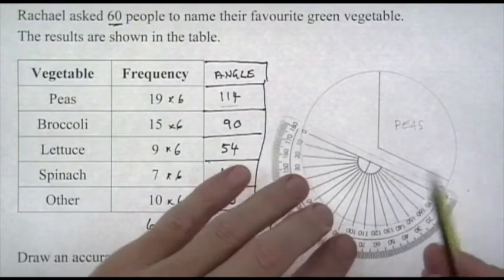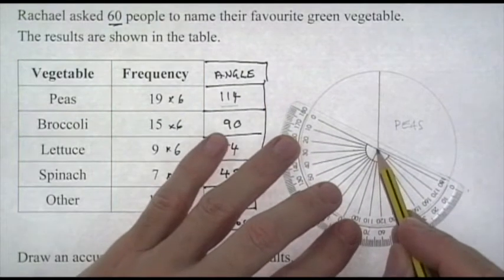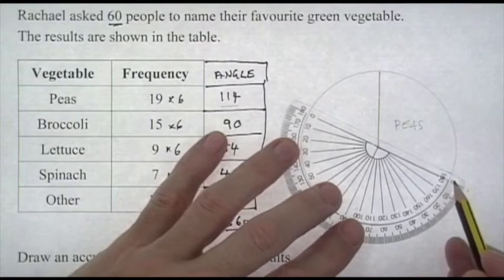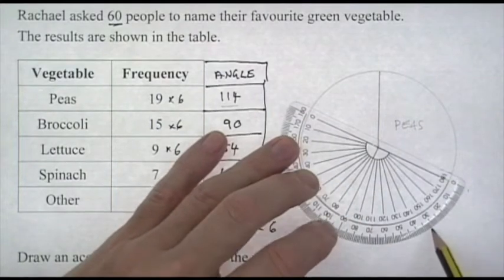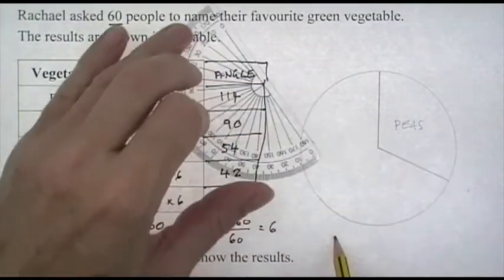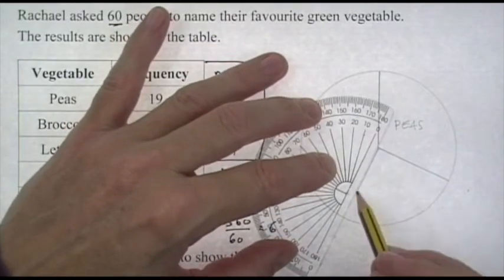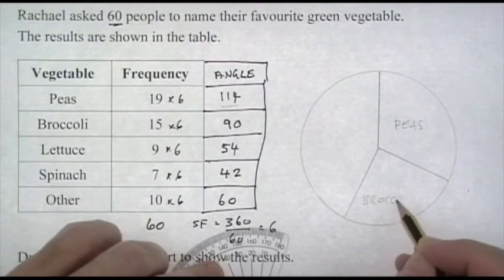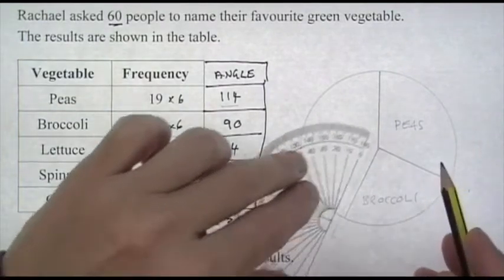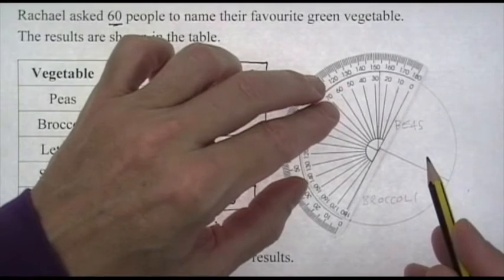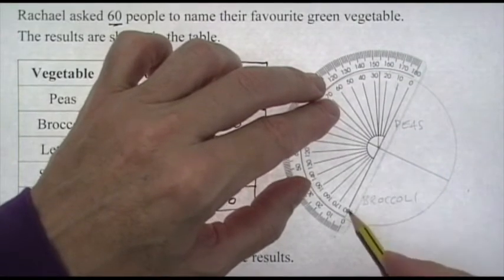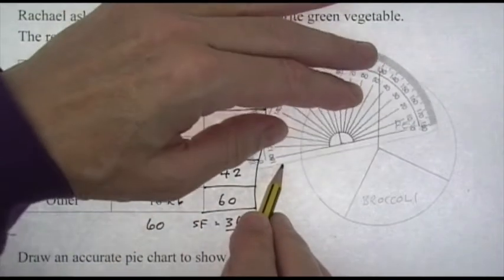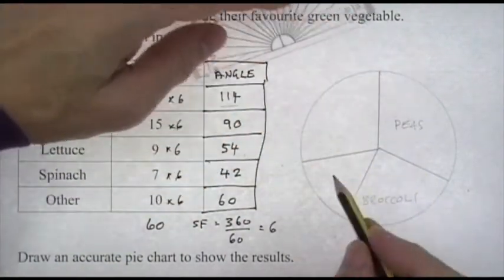Same again with 54 degrees for the lettuce. Center the protractor at the center of the circle, the zero line of the protractor on the line you've just drawn, and mark around to 54. Don't move your pencil until your protractor is in place and draw a line to the center.